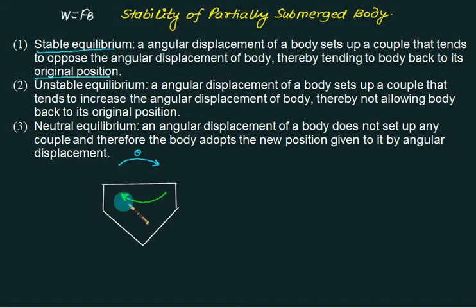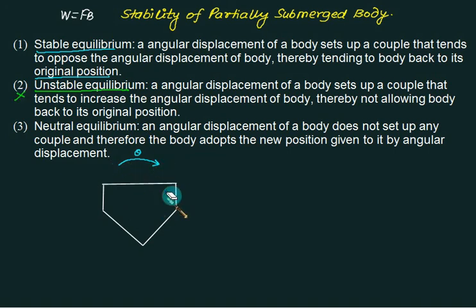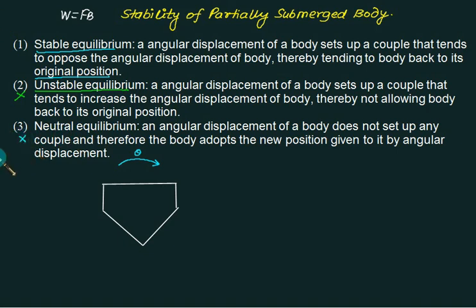In unstable equilibrium, the body will never come back to the horizontal position. We are not interested in this type. In neutral equilibrium, if we give an angular displacement and the body does not react, the body simply adopts the new position given by the angular displacement.